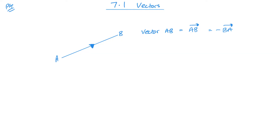Vectors are often given a single letter. So this vector AB might be called vector A, which means that if I have an equal-size vector in the opposite direction, that would be minus A. So if this is A, then this is minus A — same size, and parallel, but going in the opposite direction. Hence it's the same vector, just one has a minus and one has a plus to show the different directions.